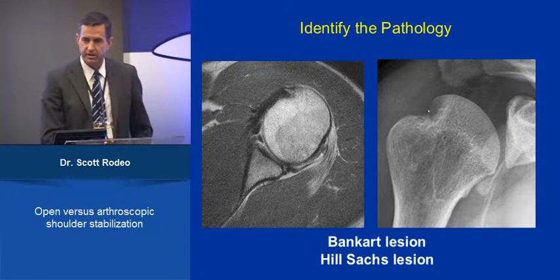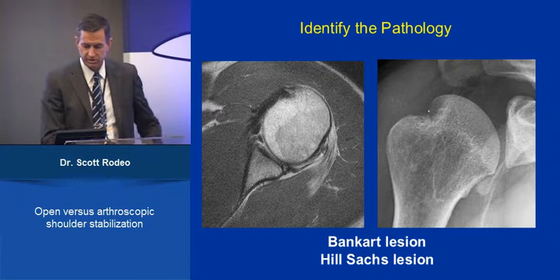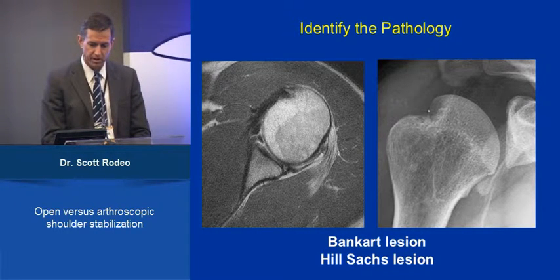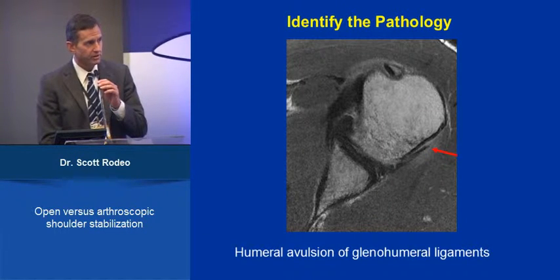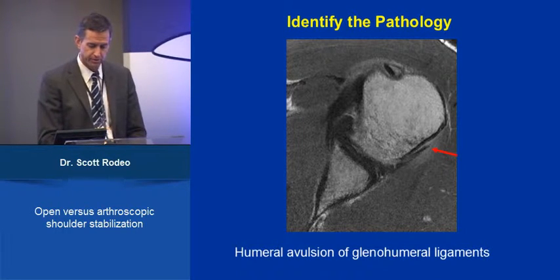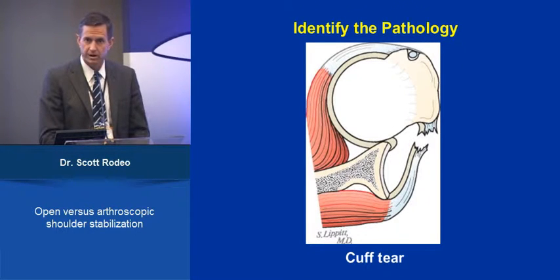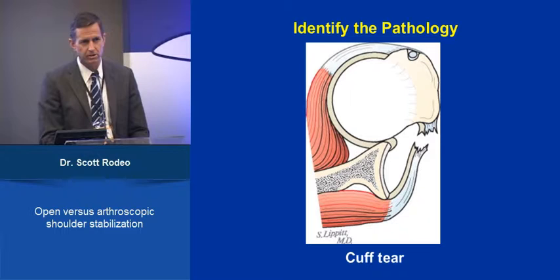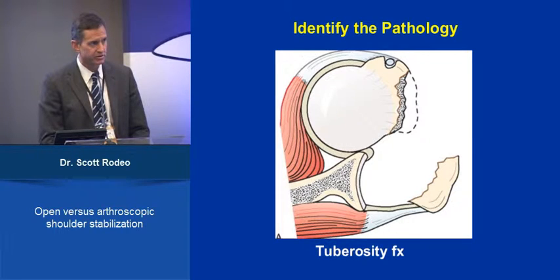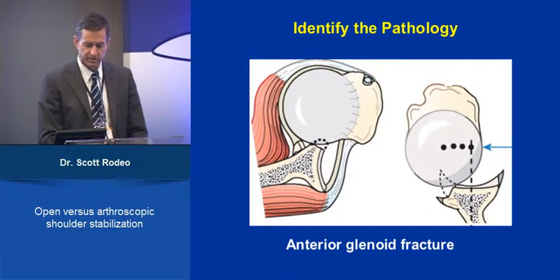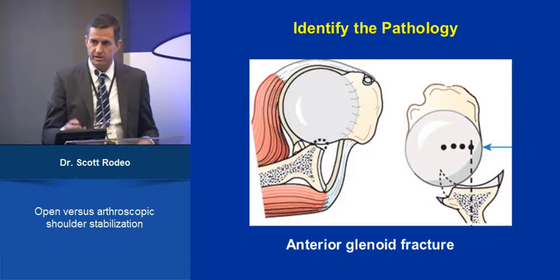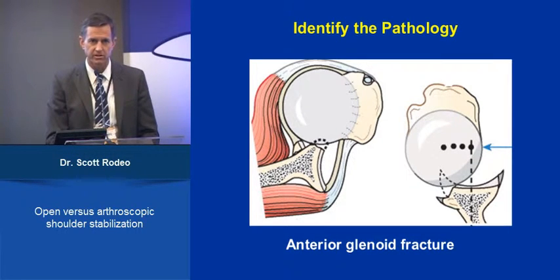Again, identify the pathology. Is there a Bankart lesion? A Hill-Sachs lesion, as you've just seen in the prior talk. We'll talk about humeral avulsion of the glenohumeral ligaments — uncommon, but on the glenoid side, capsular disruption. There's also the uncommon posterior HAGL lesion. Is there a rotator cuff tear? Unusual in younger athletic patients, but a posterior mechanism of instability may involve rotator cuff tear or a tuberosity fracture. Is there bone loss in the glenoid — an acute anterior glenoid fracture, or more commonly, gradual attritional bone loss leading to glenoid defects treated with procedures like Latarjet?